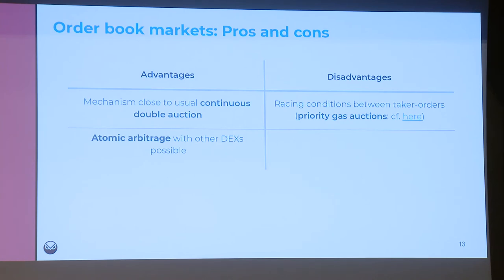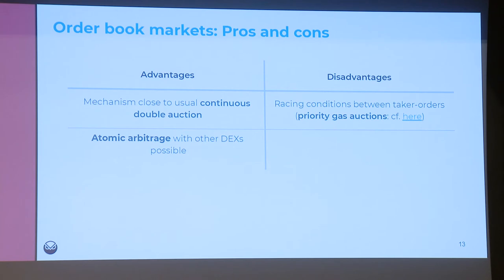The advantages are that this is continuous double auction — the trading mechanism used everywhere in traditional finance — making it very legitimate. And of course you can have atomic trades. The disadvantage is racing conditions: imagine there is a very profitable limit order and I want to trade against it. I send my transaction at 20 Gwei, but anyone else can come in and send 25 Gwei to grab the same match. This bidding is what people call priority gas auctions.